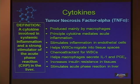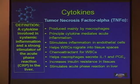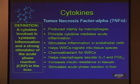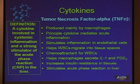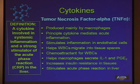Three or four cytokines in particular keep popping up in the literature with regard to periodontics. The first is tissue necrosis factor alpha, or TNF-alpha. It's produced mainly by macrophages and is the principal cytokine that mediates acute inflammation. It stimulates inflammation in endothelial cells and helps white blood cells migrate into tissue spaces.